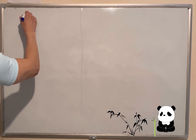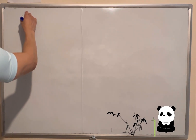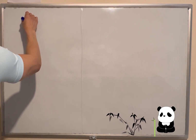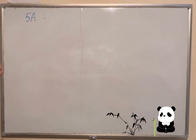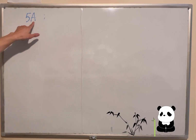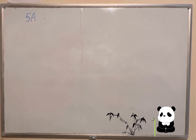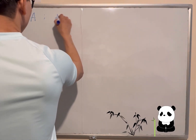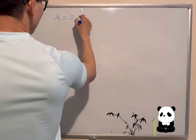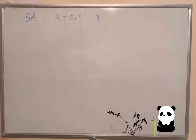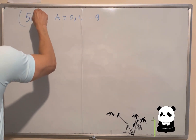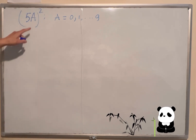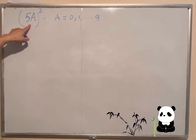For example, if I have the number 5A — that number is a two-digit number. The first digit is 5, and the second one is A, where A is from zero to nine. I will show you how to find the answer quickly when you square that number.